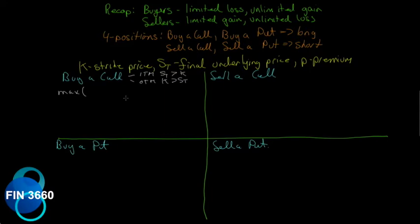The payoff from buying a call is the maximum of either (S_t minus K minus P) or negative P. In other words, the most you can lose is the premium P. If the net gain is less than the premium paid, you only lose the premium — you always take the maximum of the two terms.